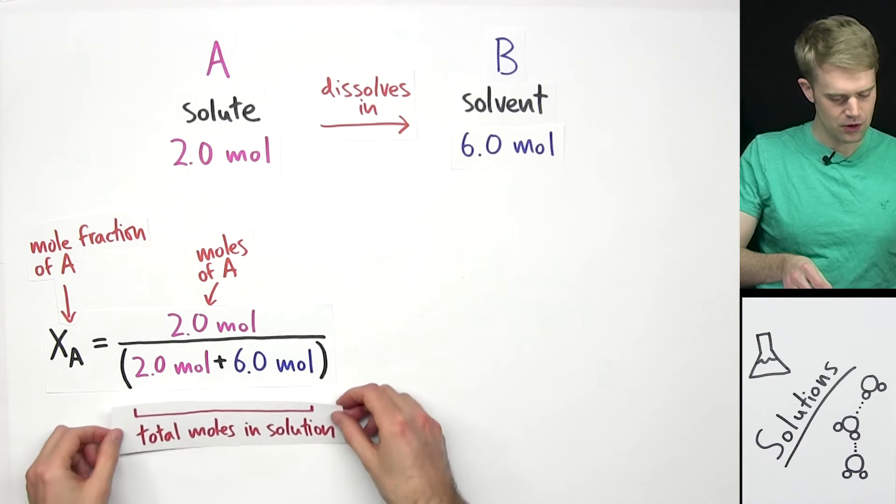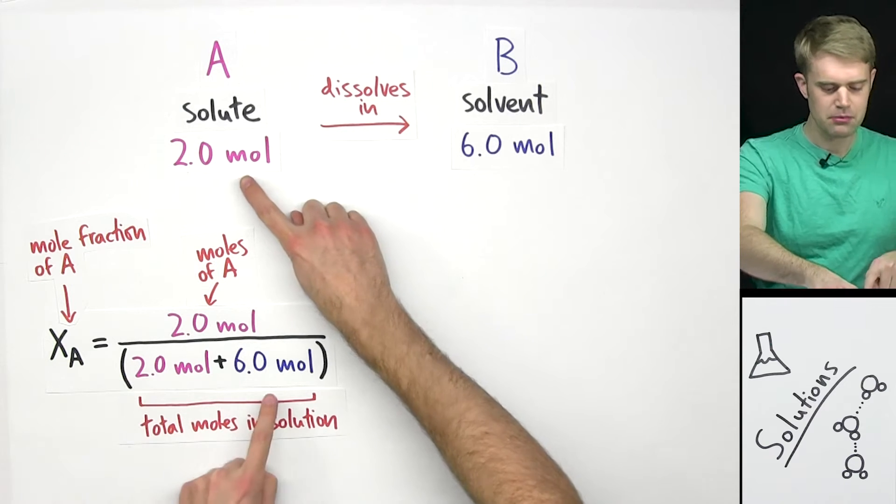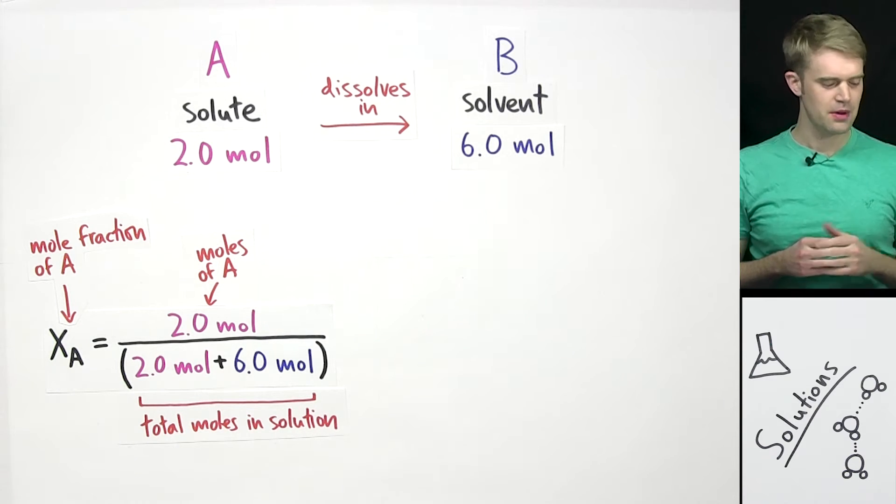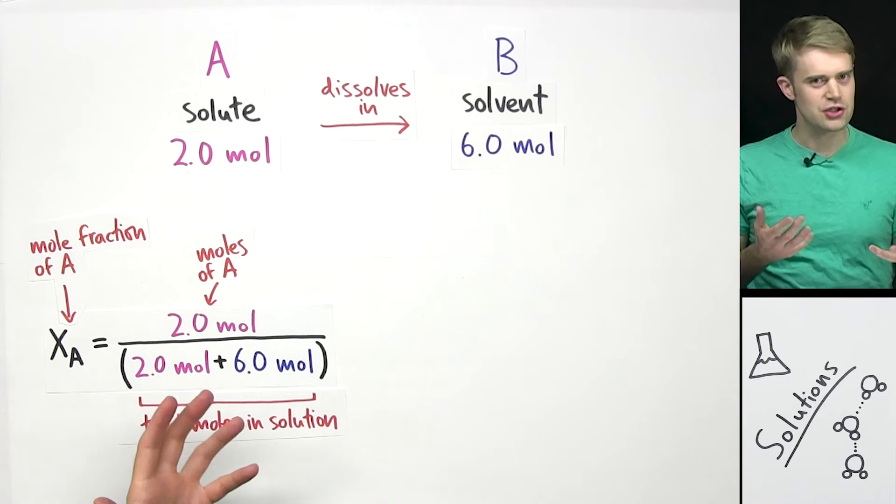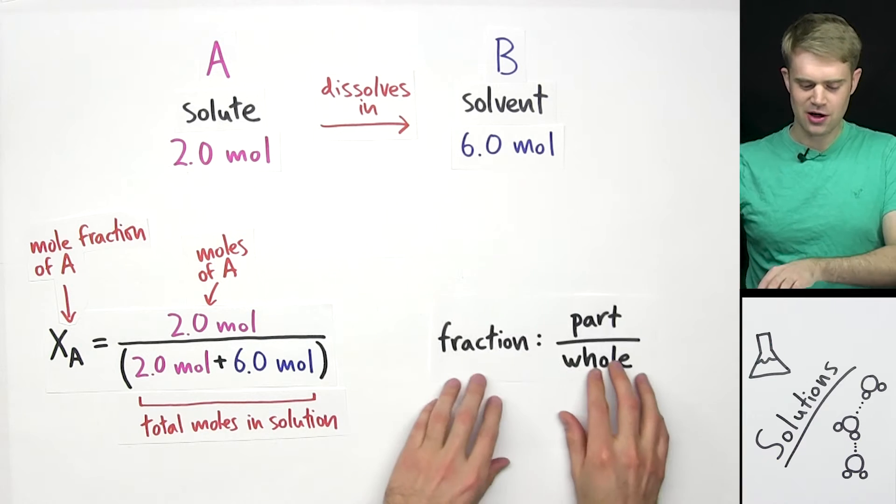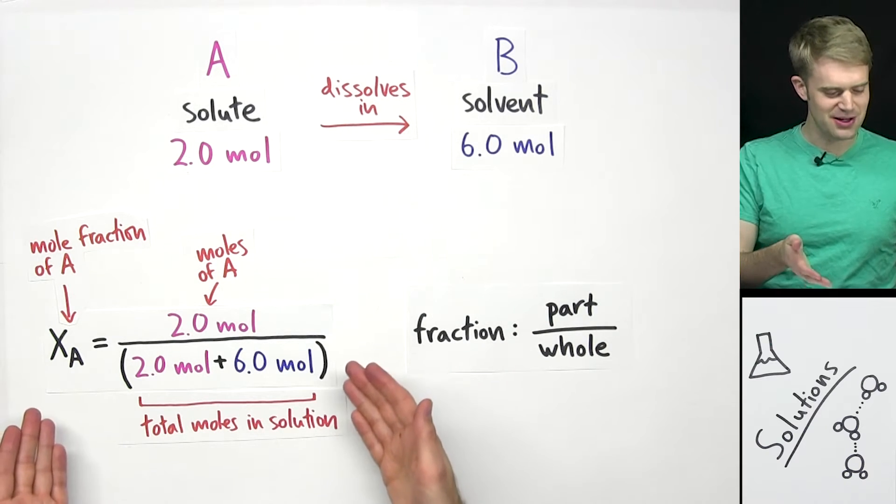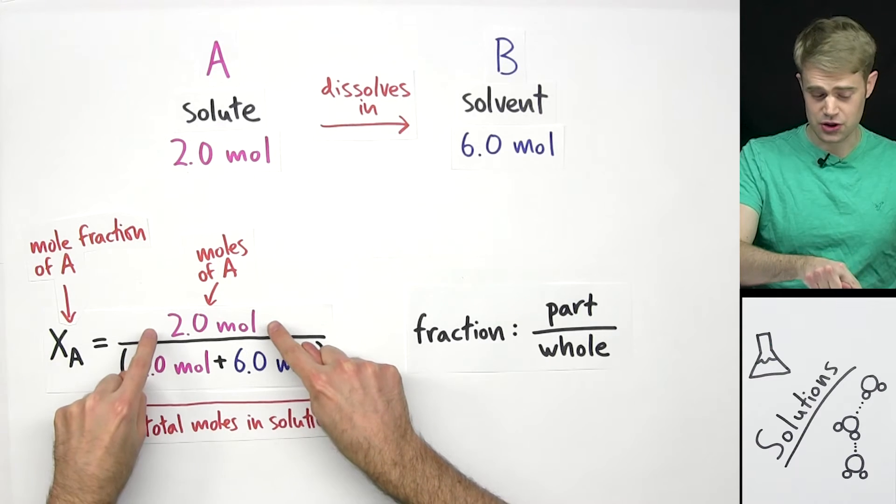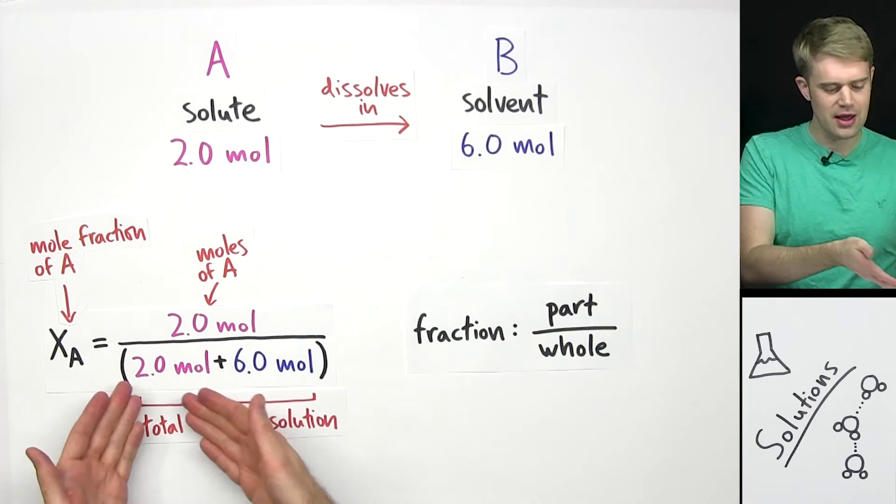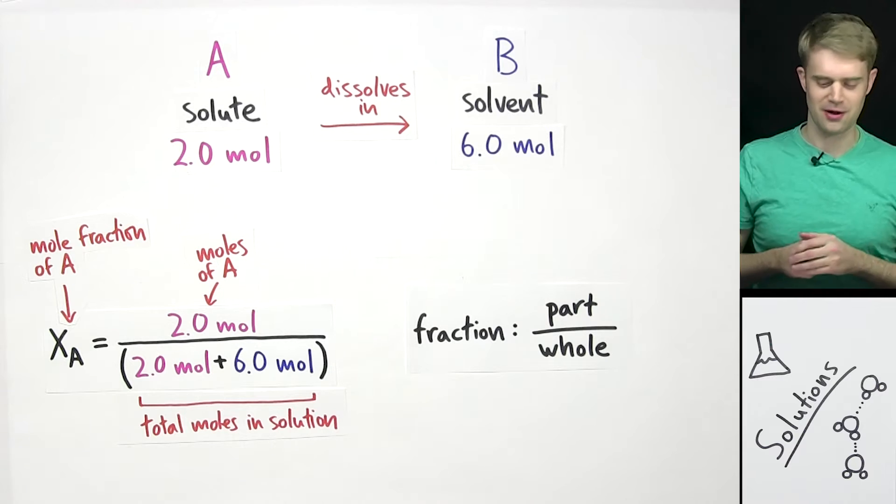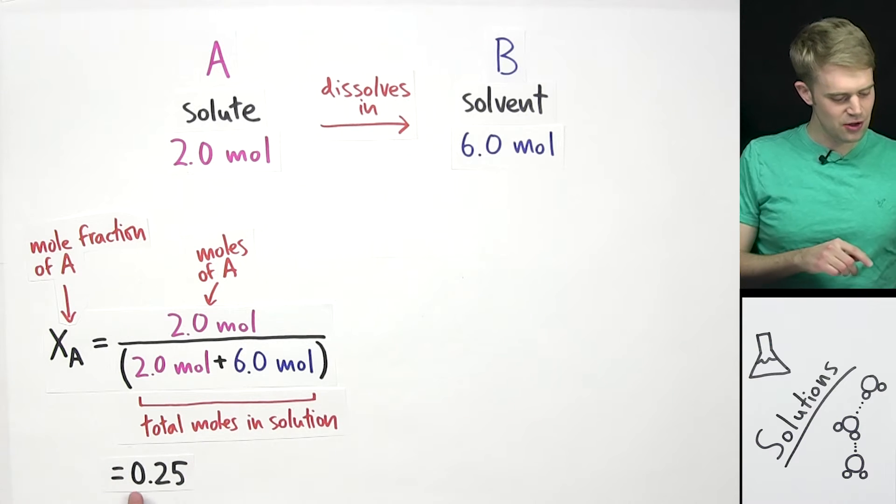On the bottom of the fraction, we have the total moles in the solution. So we have the moles of A plus the moles of B. Now, this equation makes sense if you think about fractions, because when we're talking about fractions, we're talking about a part compared to a whole. In this fraction up here, we have the part of the solution that comes from A. Then down here, we have the whole solution. We have A and B together, the total, the whole thing. Now, when we do this math, we end up with 0.25.